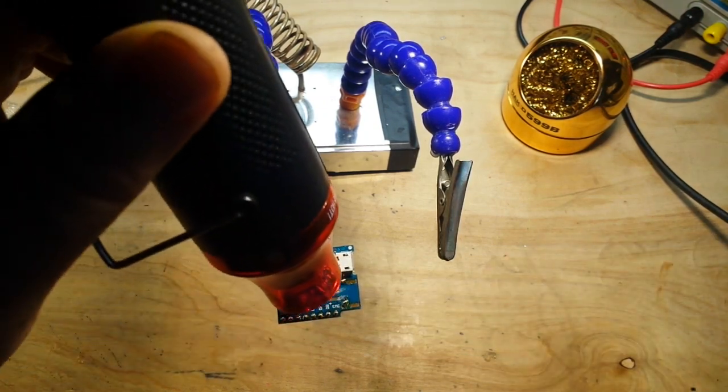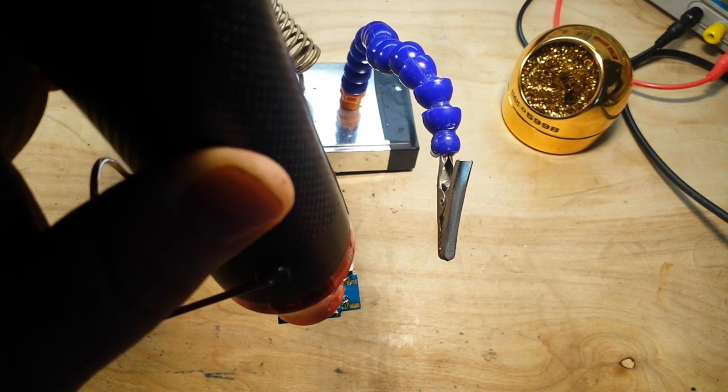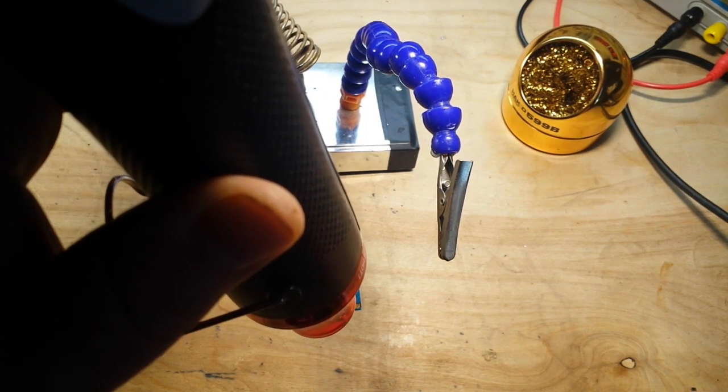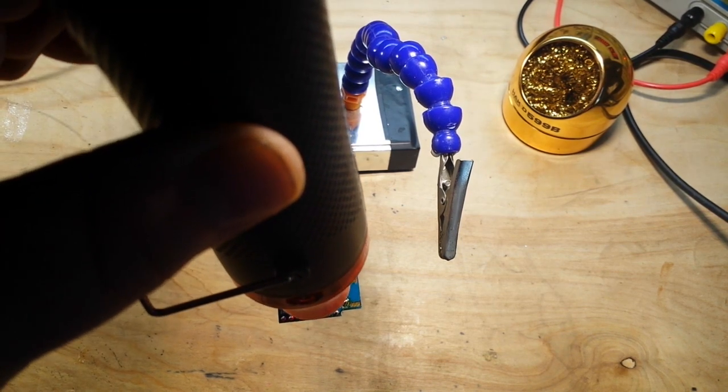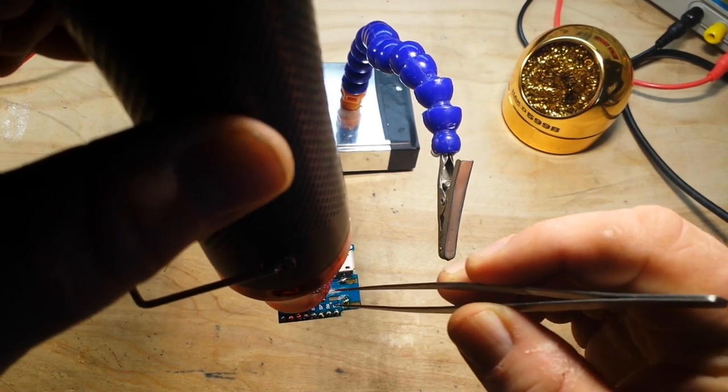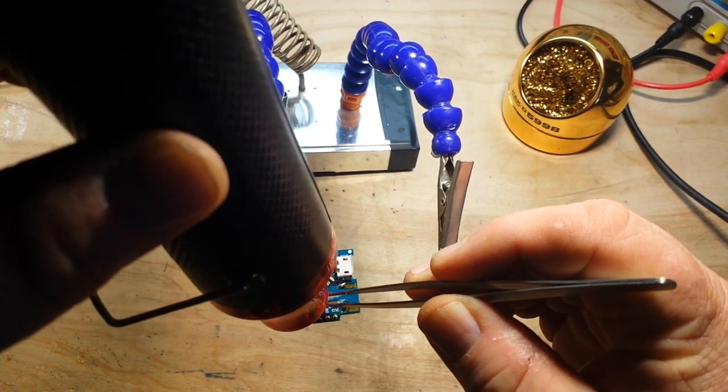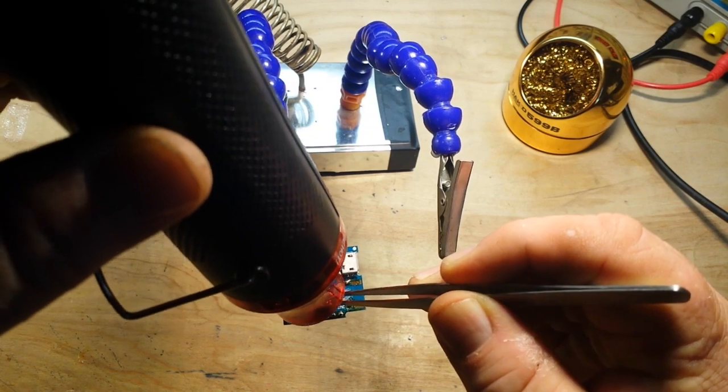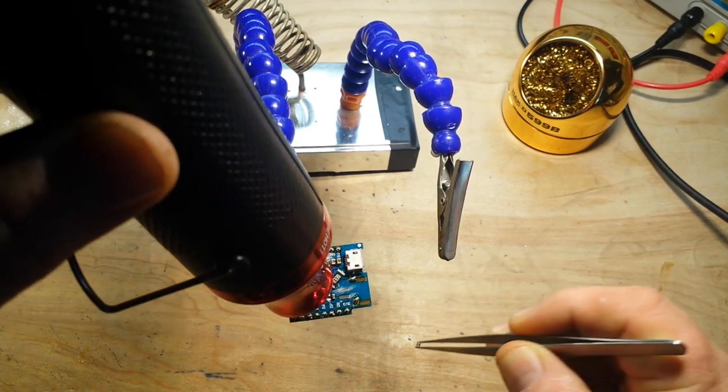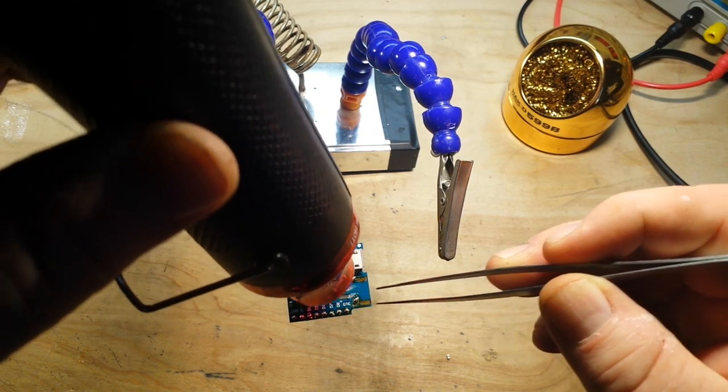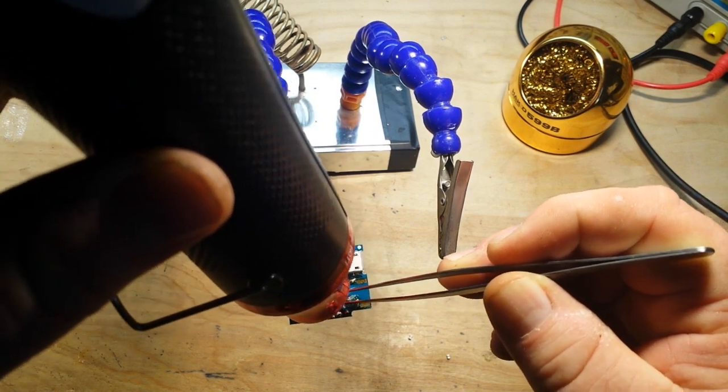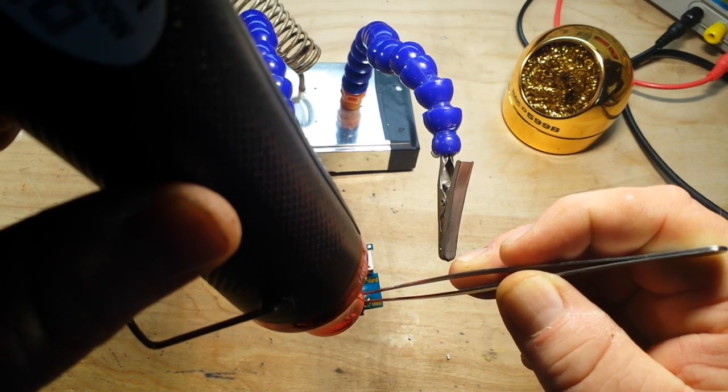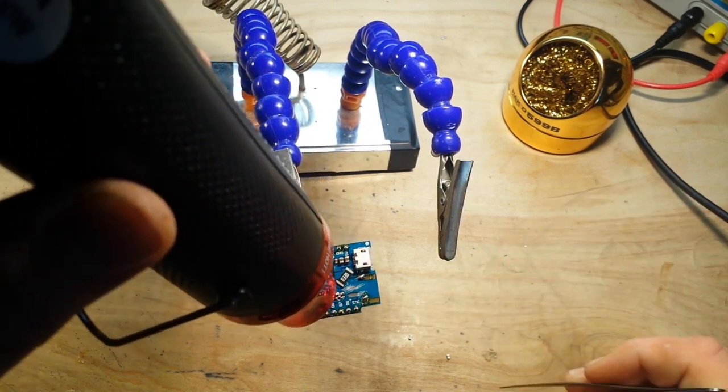Let's try something smaller like these little capacitors. I've been holding it on there for about 30 seconds. Well that worked out pretty good, it takes off the little parts without too much trouble. That big 1206 might have been just a bit too much.